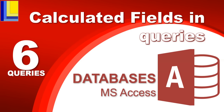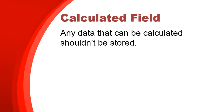This is part six of our series on queries in Microsoft Access databases. We're going to be looking at a calculated field or fields that we can use in queries. A tip from the first series on tables: you shouldn't store any data in your database tables that can be calculated, because you're just wasting space. Anything that can be calculated don't store it — you can calculate it in queries instead.